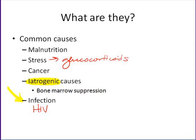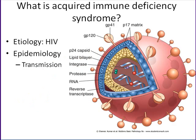What I want to spend our time focusing on in this part of the lecture is just one example of a secondary type of immune disease. I'm going to focus on how HIV infection depletes the immune system. HIV is the causative agent of a condition called AIDS, or acquired immunodeficiency syndrome, which you all probably know already. The etiology is the HIV virus.